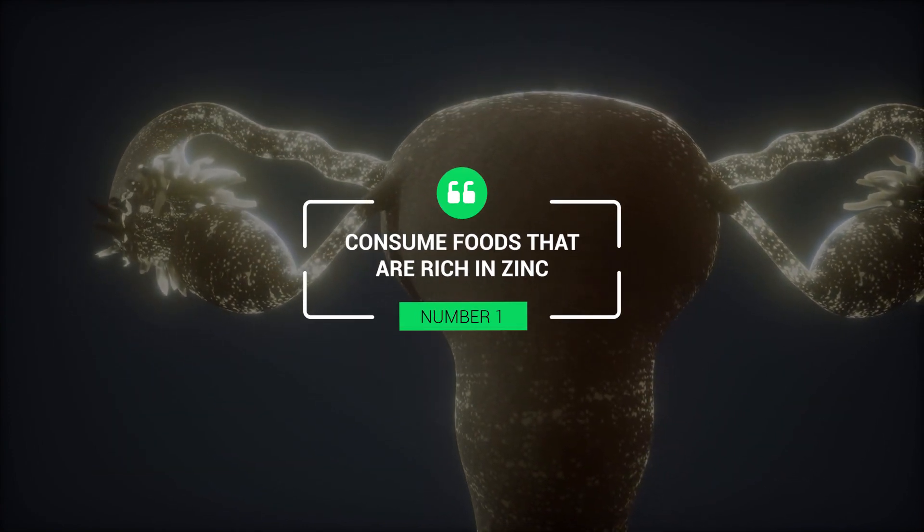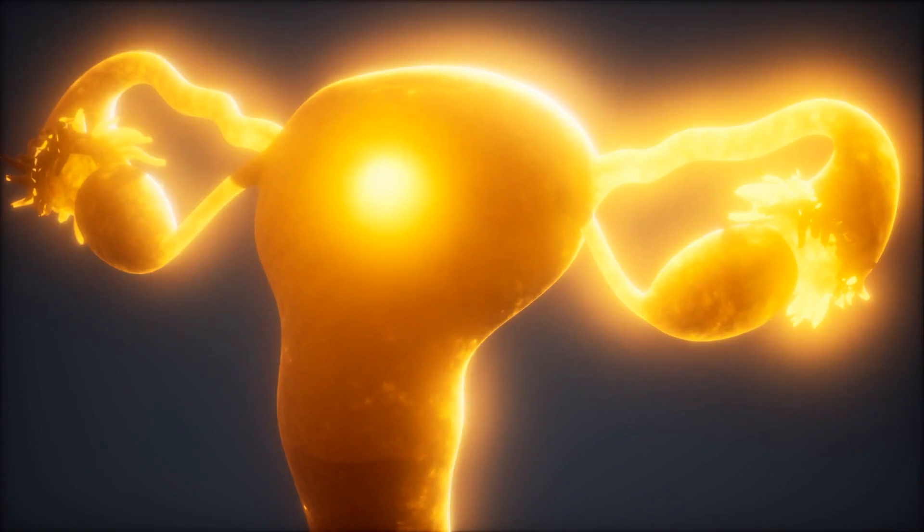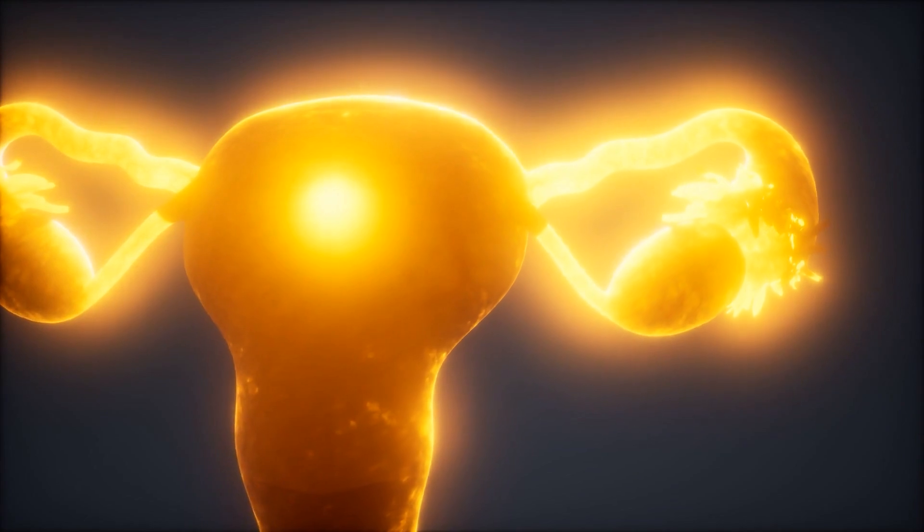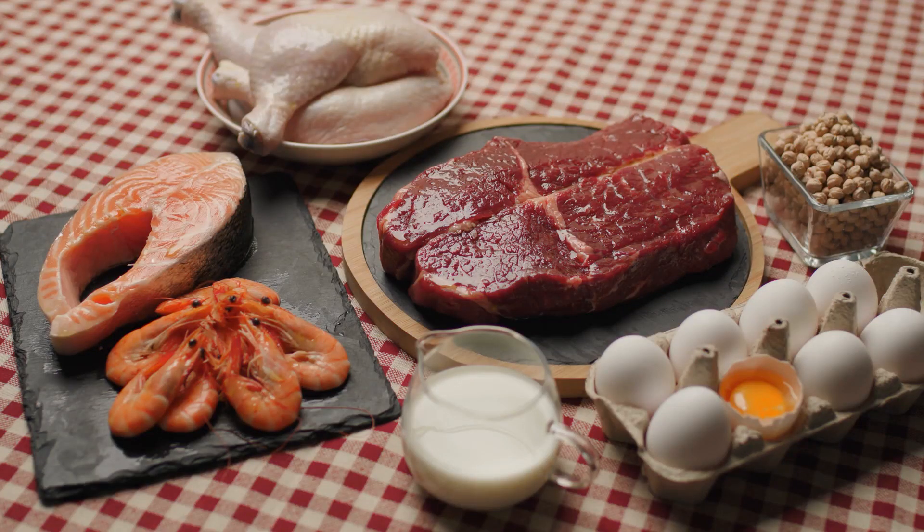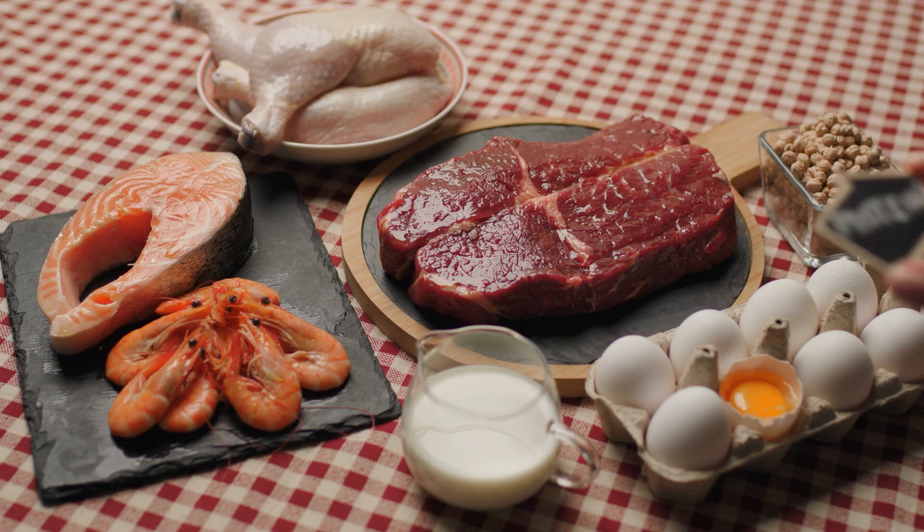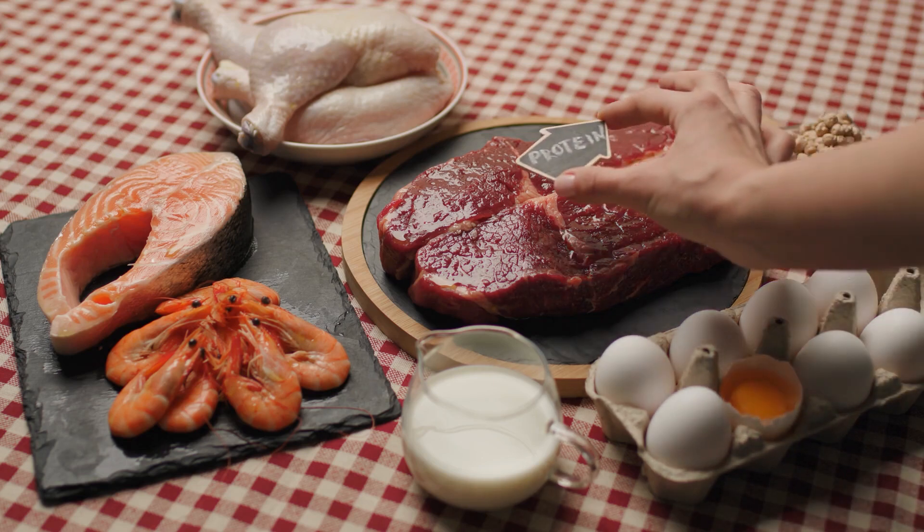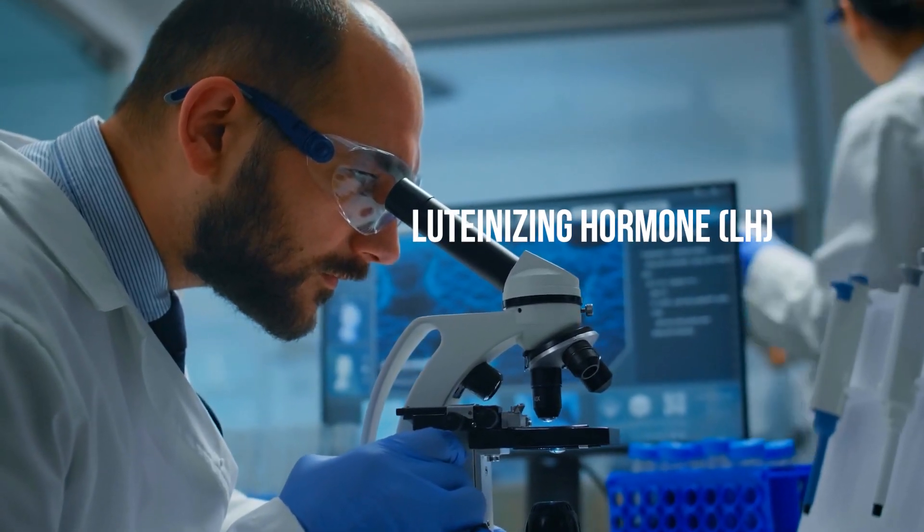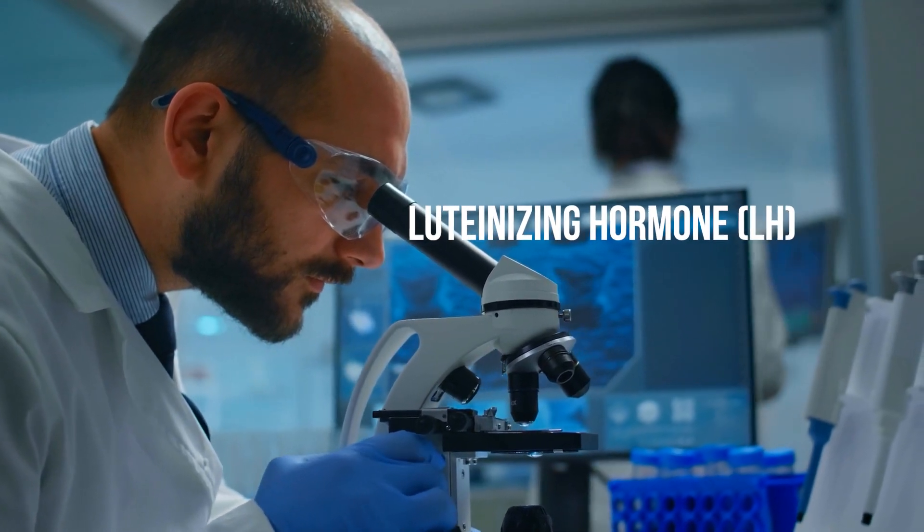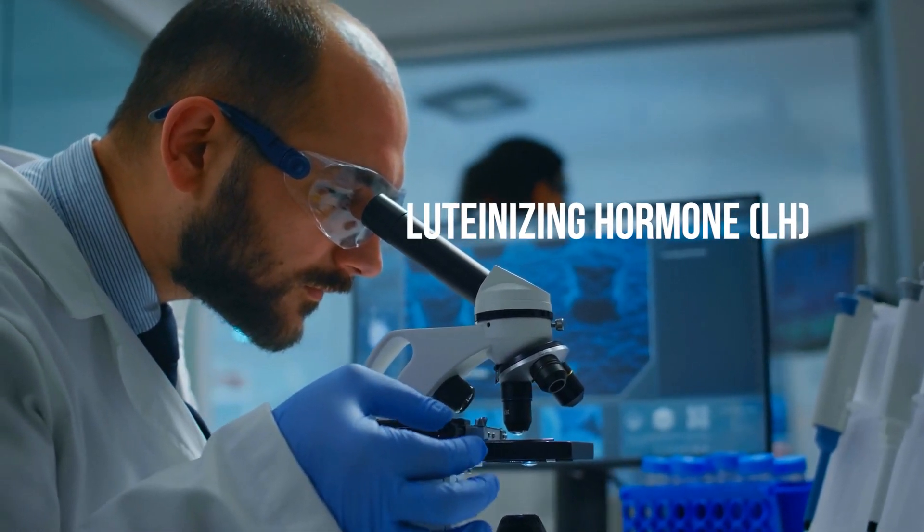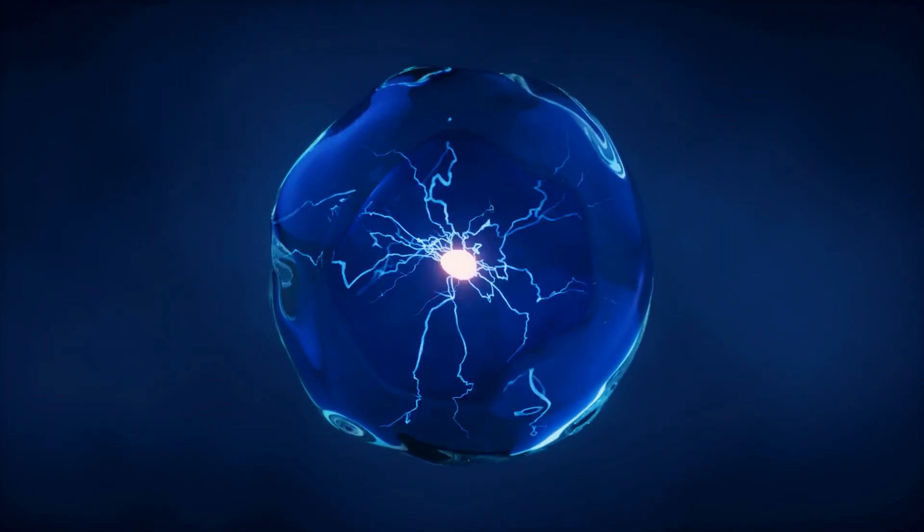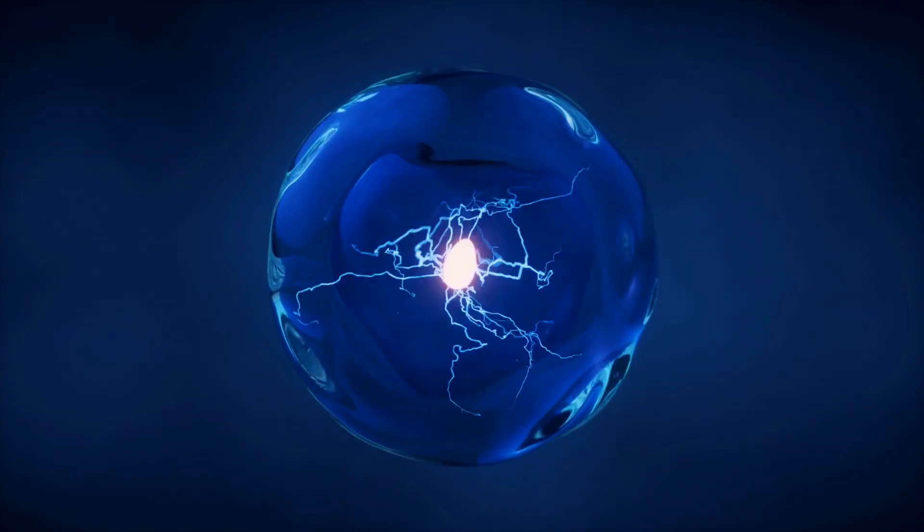1. Consume foods that are rich in zinc. Zinc is an essential mineral that influences hormone production, including progesterone. Foods rich in zinc can help increase progesterone levels naturally, making it particularly crucial for women trying to conceive or maintain a healthy pregnancy. Studies have found that zinc increases progesterone levels in women by stimulating the production of luteinizing hormone, LH. LH is responsible for triggering ovulation and helps promote the development of ovarian follicles, which produce progesterone.